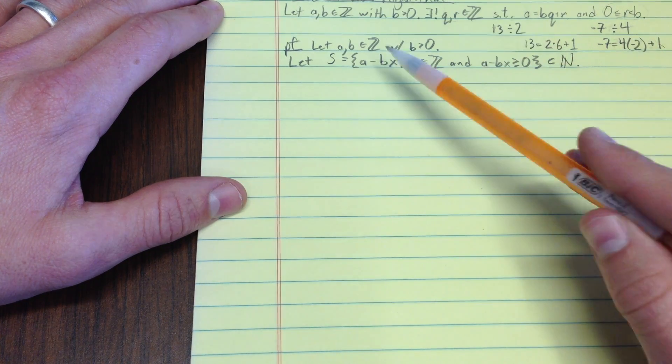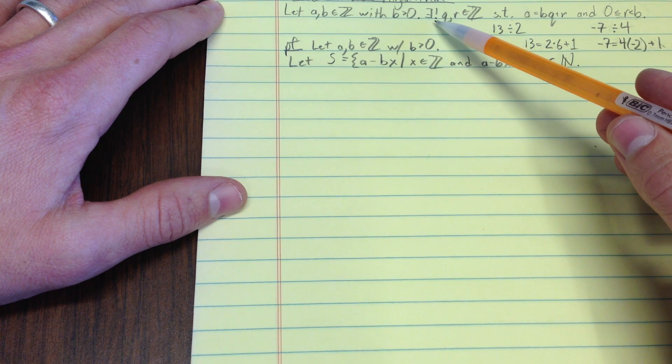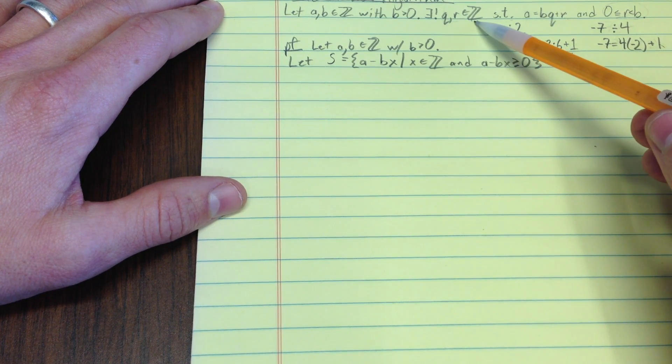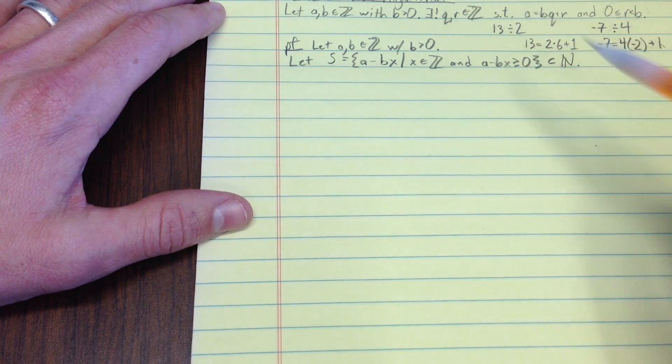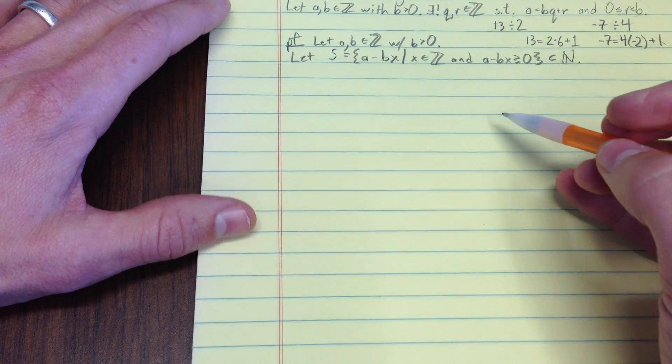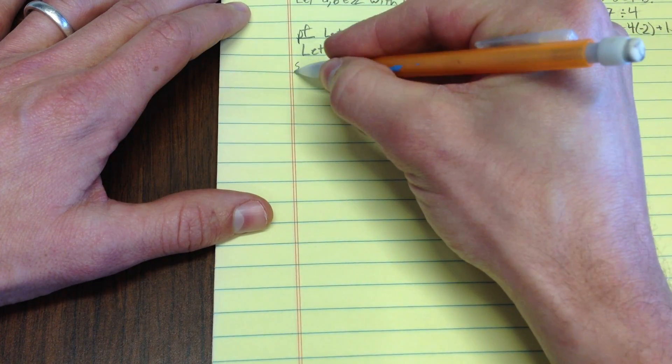I get this for free by the definition of what this thing is. Then I'm going to go over here and show that any other choice for q and r, we'll call them q bar and r bar, are actually the same things. So, step one.